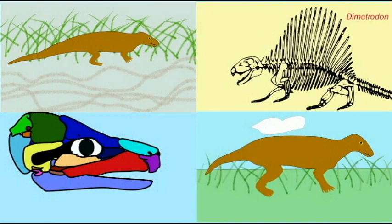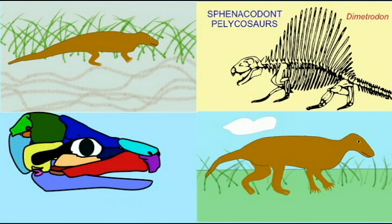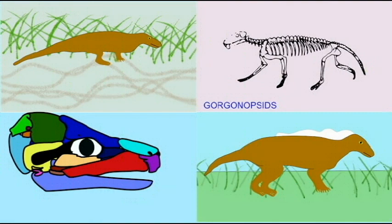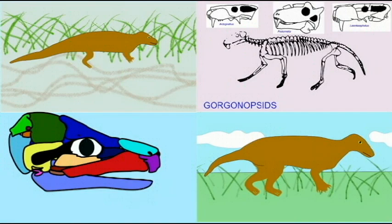I am a therapsid reptile, a synapsid reptile. Me and my kin, we dominate so many terrestrial habitats. While the pelycosaurs, our ancestors, are not as common as they once were, they are still around. And we therapsids have produced so many carnivorous forms and herbivorous forms. We can be found everywhere.